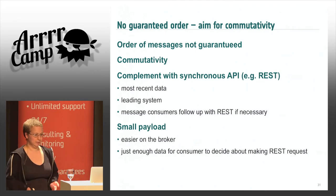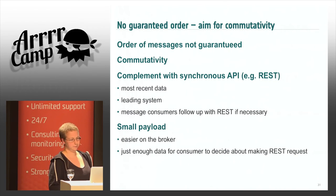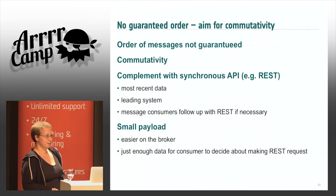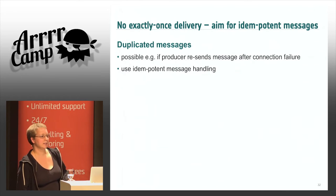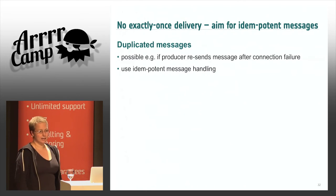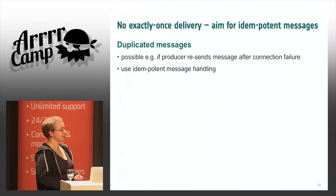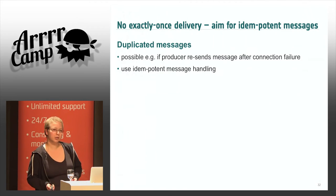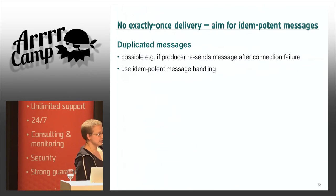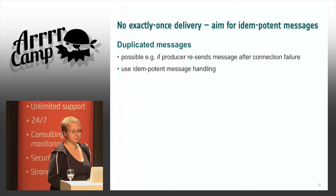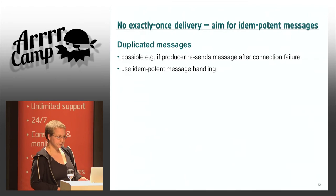Another property of a distributed system is that there's no such thing as exactly-once delivery — you might end up with duplicated messages. A producer recovering from a connection failure may not be able to determine if a previously sent message made it to the broker. So to ensure at-least-once delivery, a well-behaved producer will send the message again, which might result in duplicates for the consumer. Whenever possible, it's a good idea to use idempotent message handling to avoid issues with that.